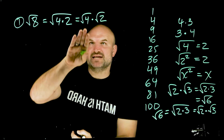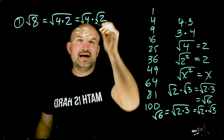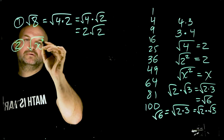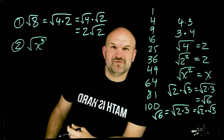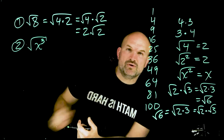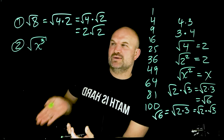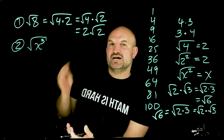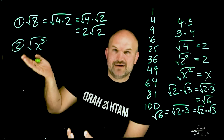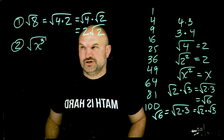Using the product rule in reverse, I can rewrite the square root of 4 times 2 as the square root of 4 times the square root of 2. Now I basically have two problems: the square root of 4, which I know is 2, multiplied by the square root of 2. So the square root of 8 simplifies to 2 times the square root of 2. When simplifying a radical, we always want to take the square root of something raised to the second power so we can undo it.